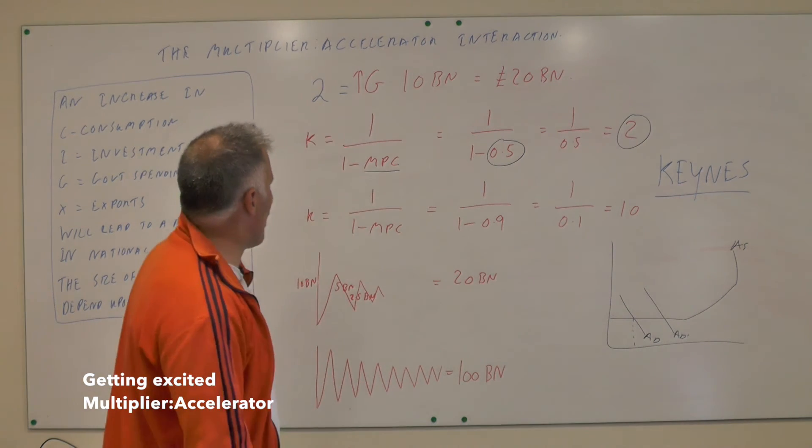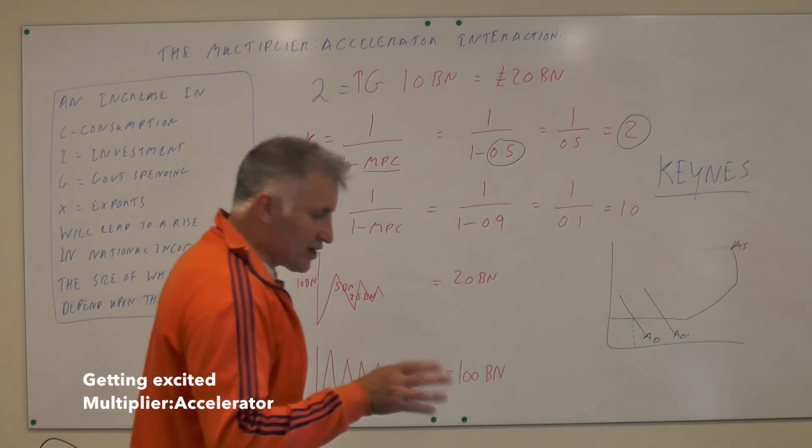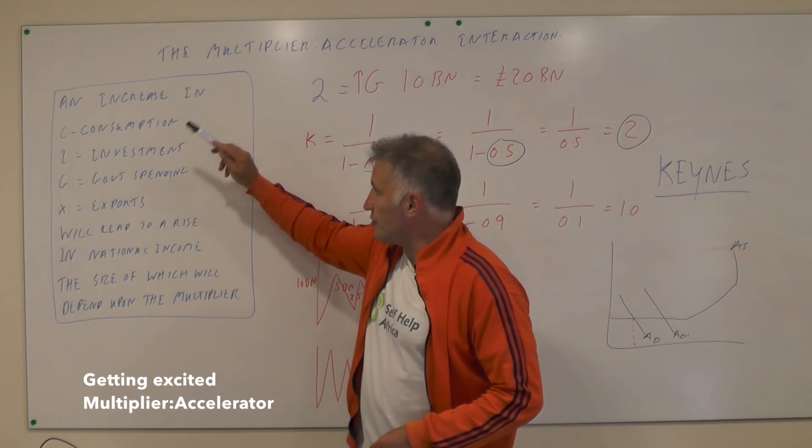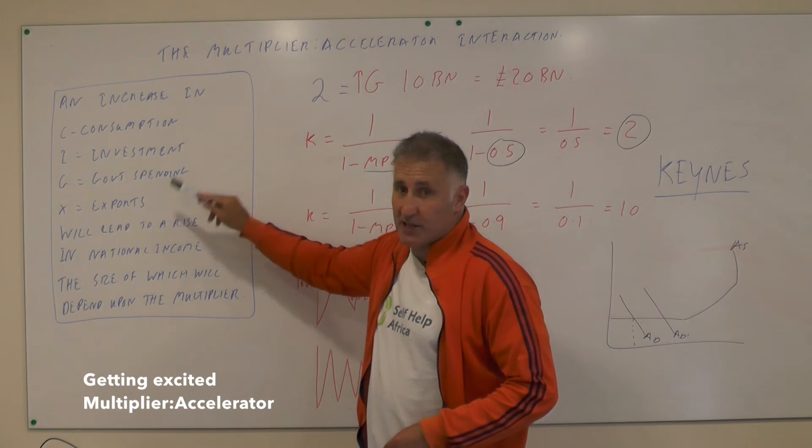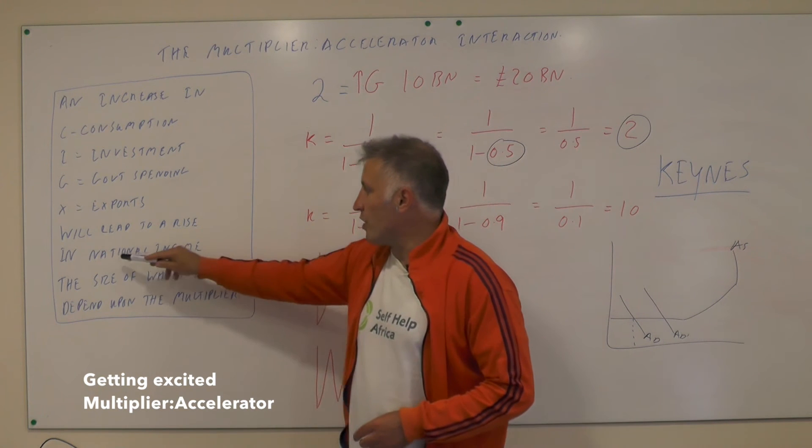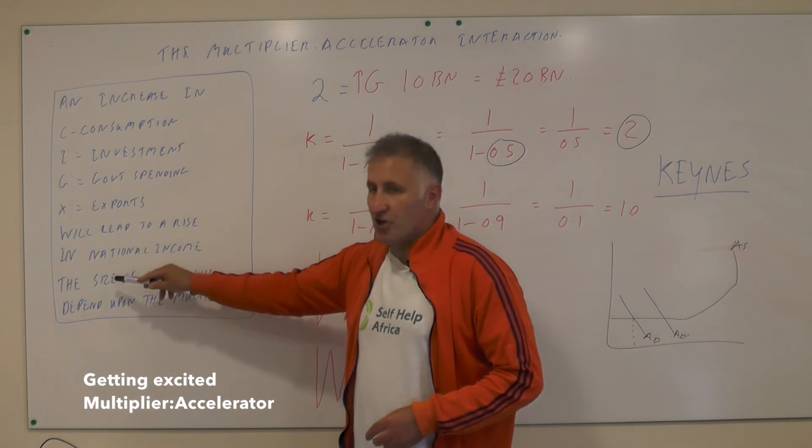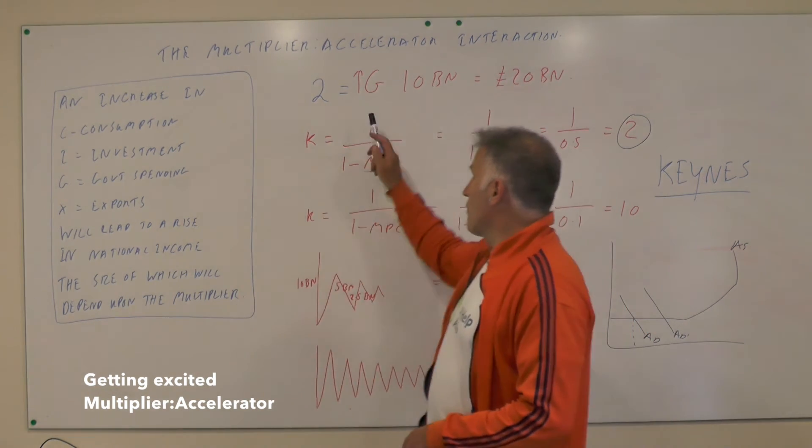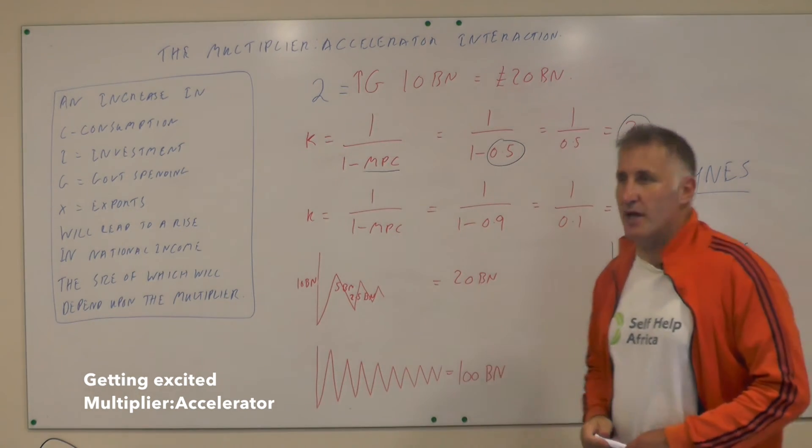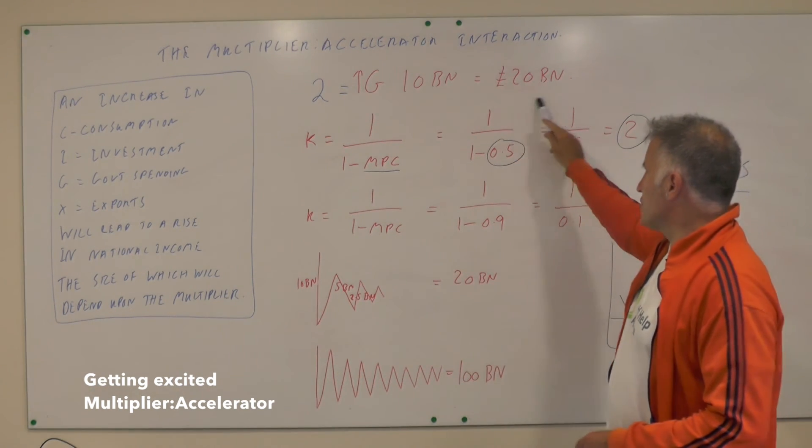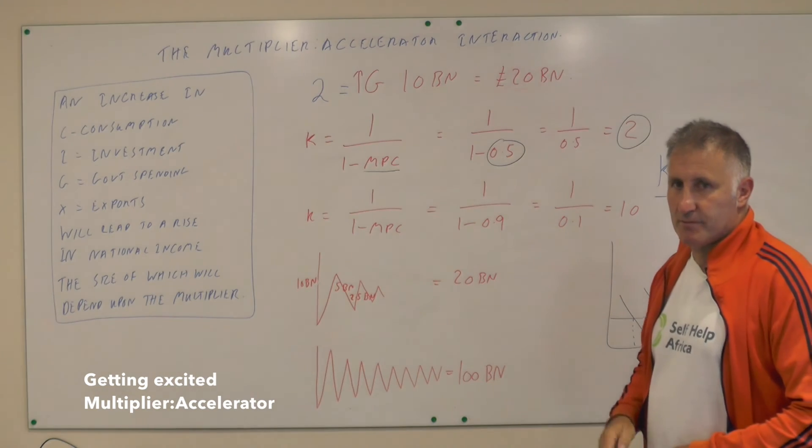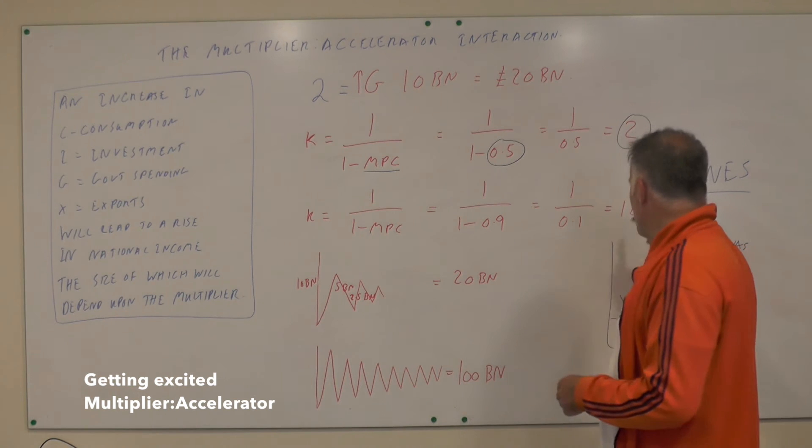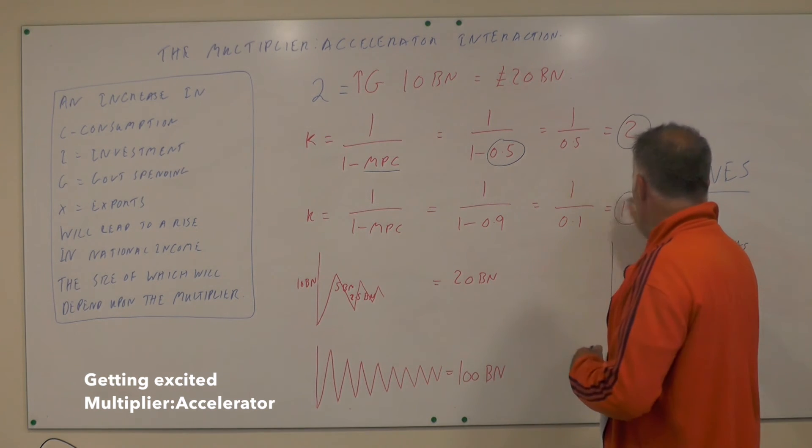So the definition of the multiplier is: an increase in either consumption, investment, government spending, or exports will lead to a rise in national income, the size of which will depend upon the multiplier. So if the multiplier is equal to two and we increase government spending by ten billion quid, then we're going to get a rise in national income of twenty billion pounds.